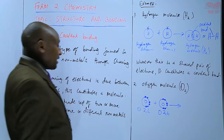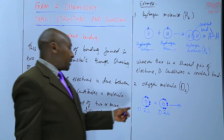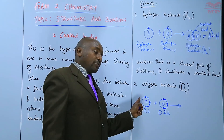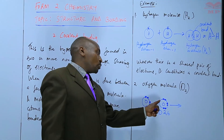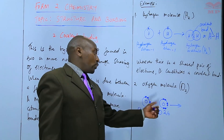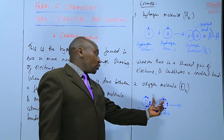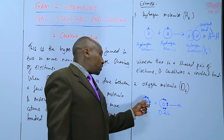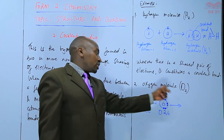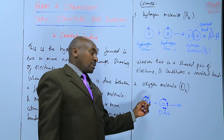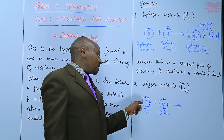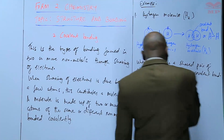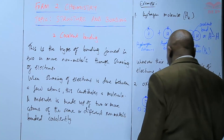Oxygen is O, 2,6 — meaning it has six outermost electrons. This oxygen atom needs two more electrons to be stable, and the other oxygen atom also needs two more to be stable. So the two will come together and share electrons.